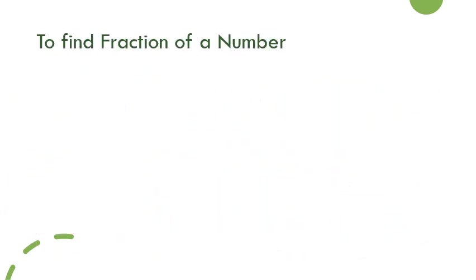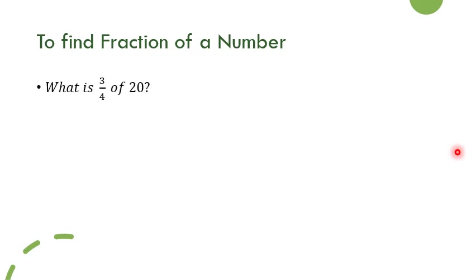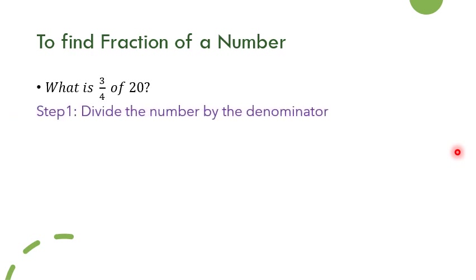Every time it is not convenient to group pictures and find fraction of a number, so here we have a very simple two-step procedure. We can use the same question: finding 3 by 4 of 20. Step 1 is to divide the number by the denominator. Our number is 20 and the denominator is 4, so we divide 20 by 4.